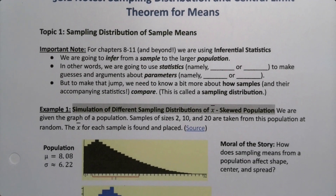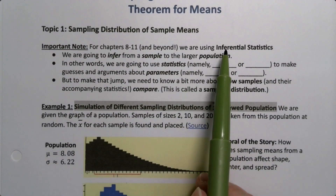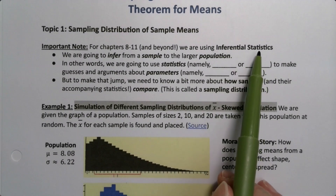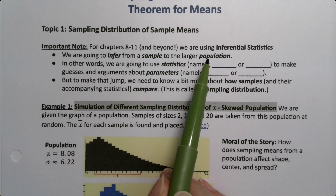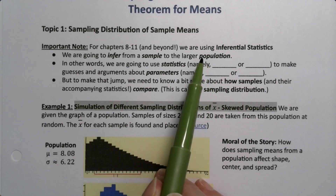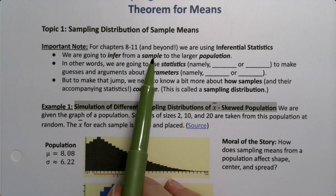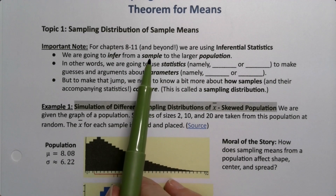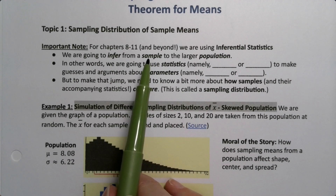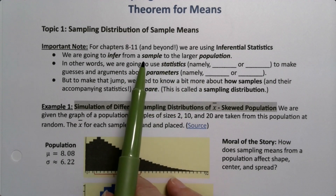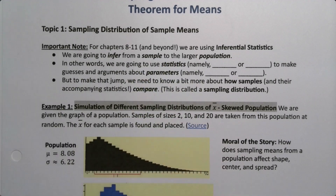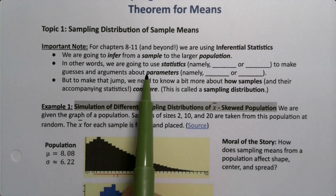What are we doing in these later chapters that requires this? Well, we're doing something called inferential statistics. We talked about this way back in chapter 1, but populations are generally so big that you can't gather data on the whole population. So what we do instead is gather a sample — hopefully a nice random and unbiased sample — and we make inferences. We say, I think that the population is going to look like this sample. In other words, we're going to be using statistics to make guesses and arguments about parameters.